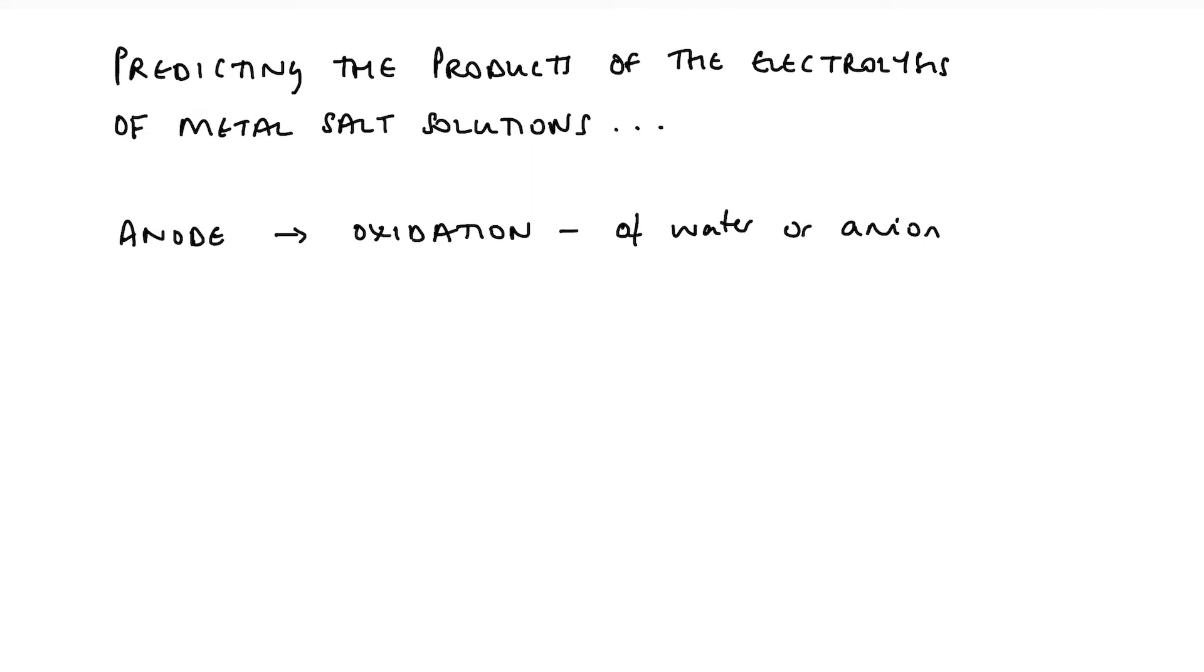So the rules are, if my anion, if my metal salt is a halide, so from group seven, then it is the halide that will be oxidized. So we're talking bromide ions, chloride ions, iodide ions are common, in which case, so for example, say I had a solution of potassium bromide, then the bromide ions would be oxidized, not water, and I would form bromine.